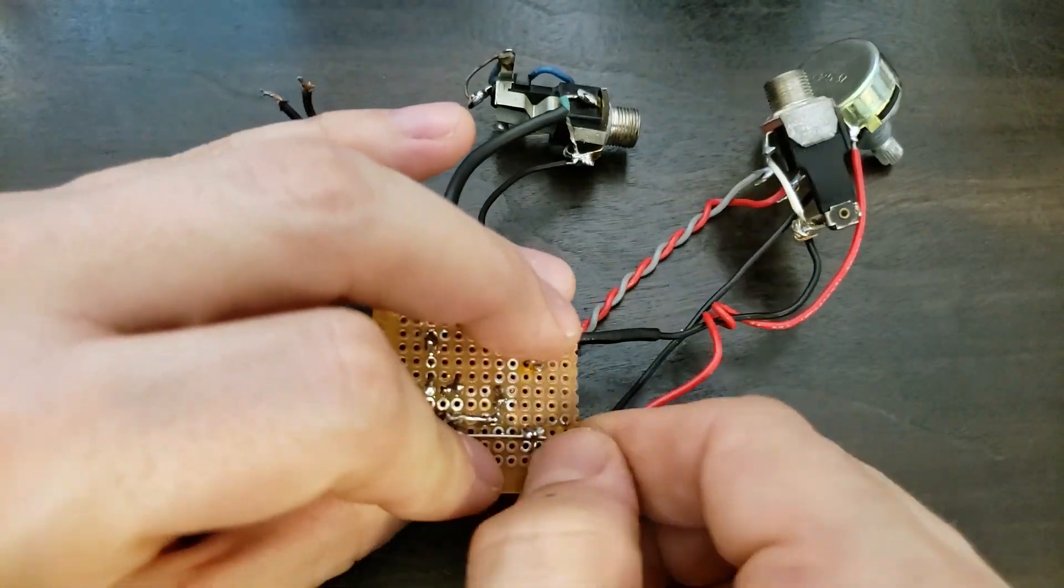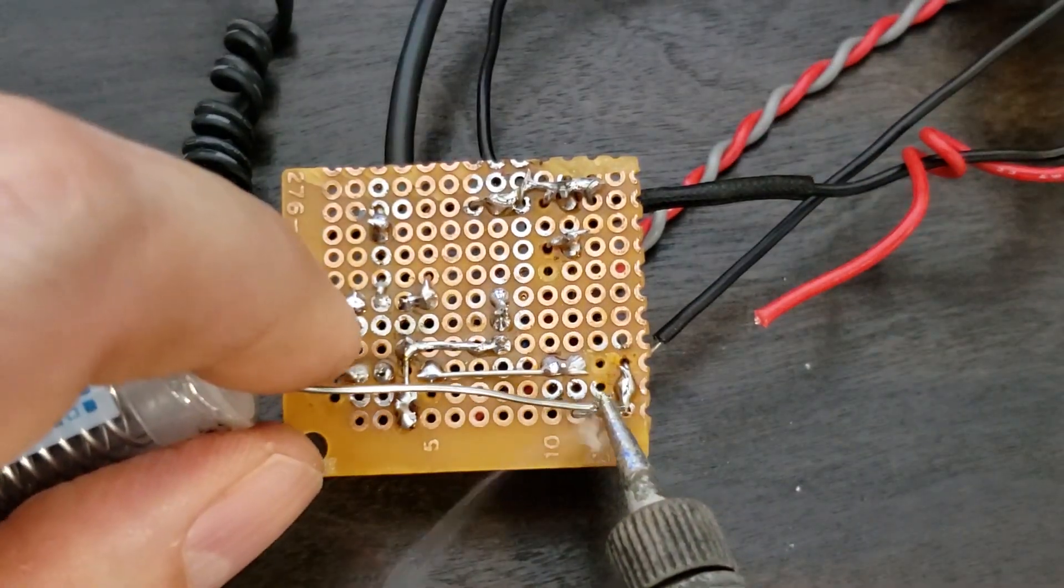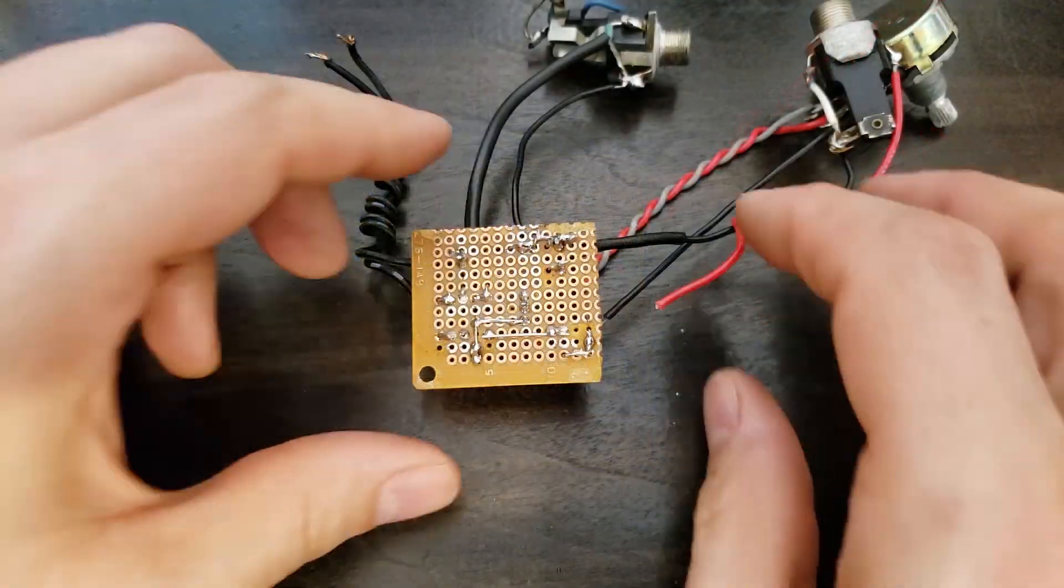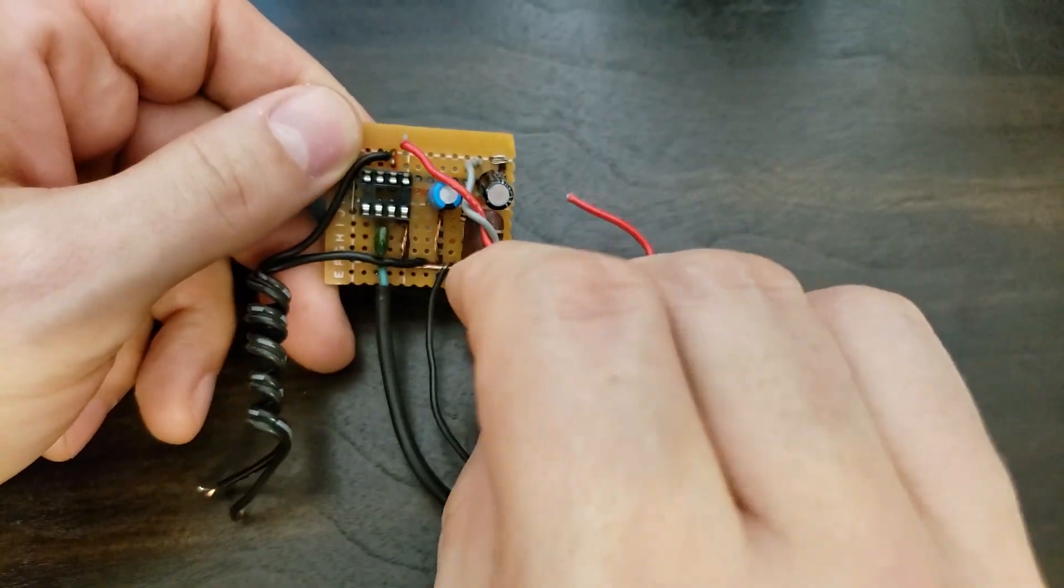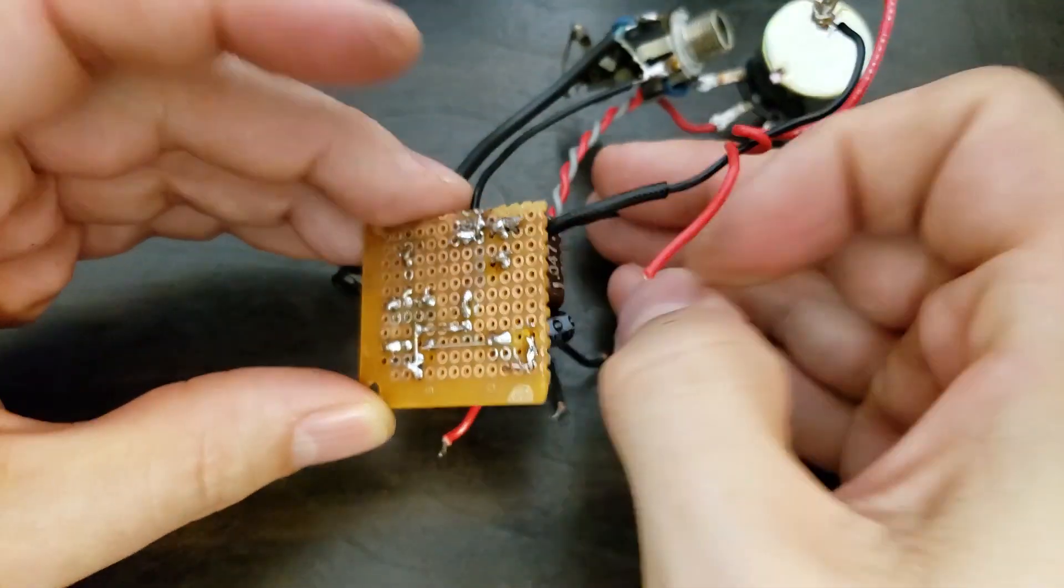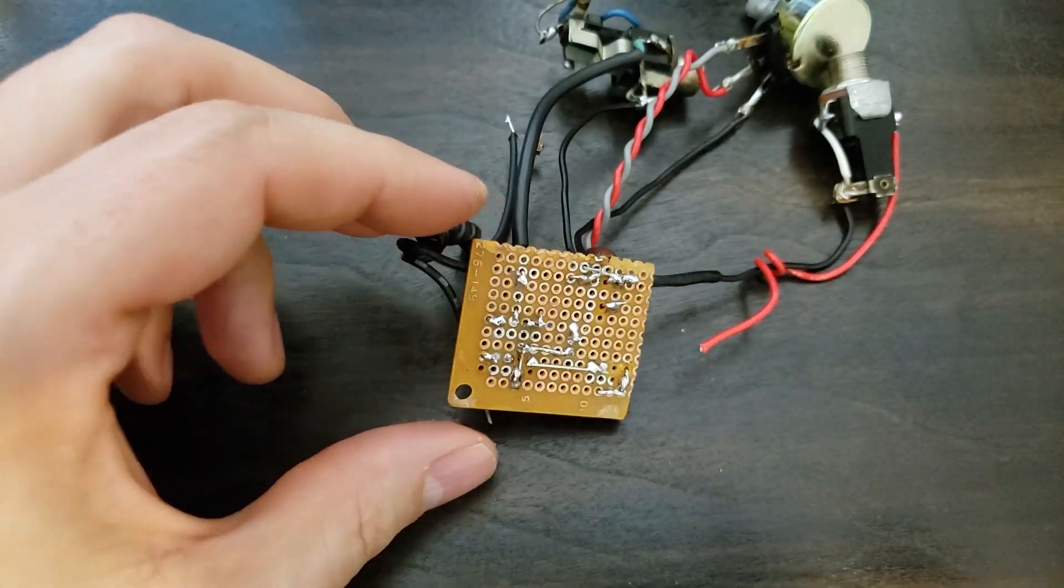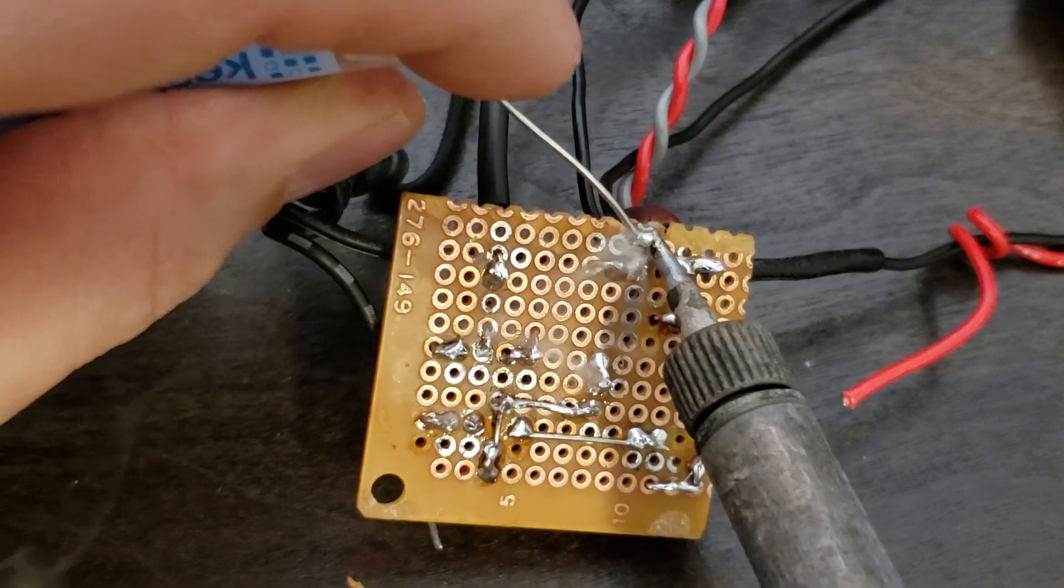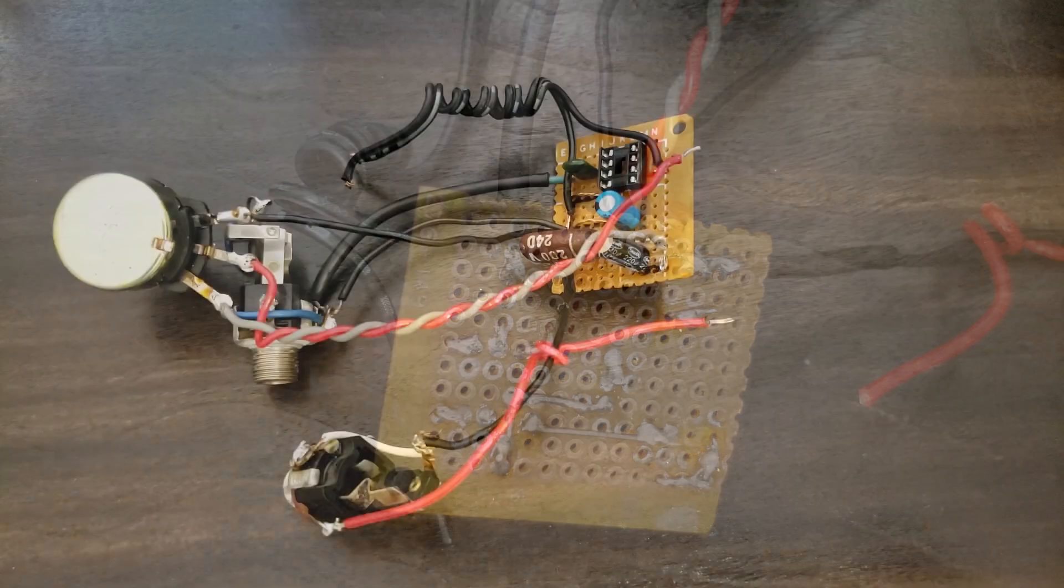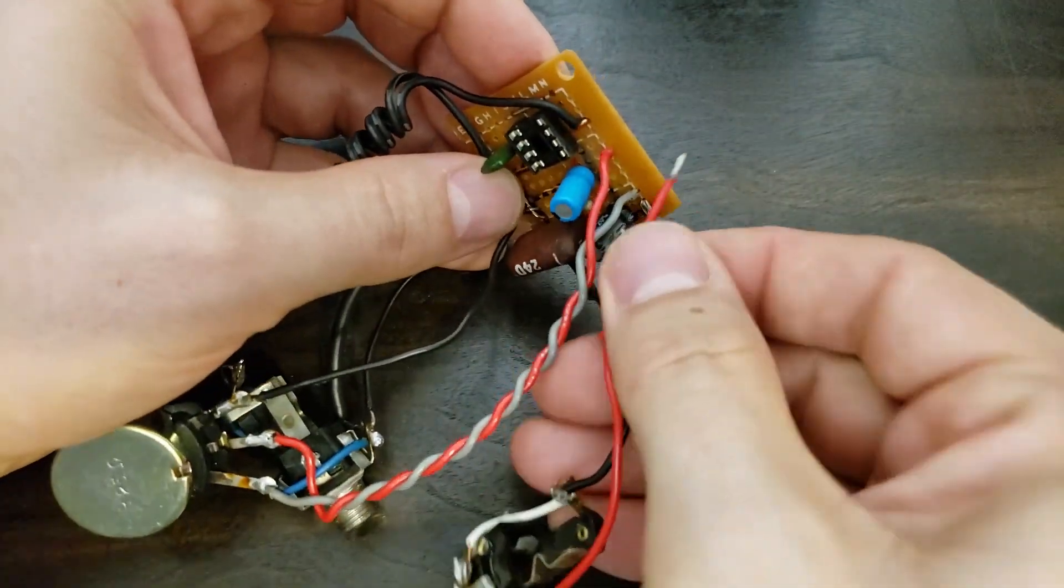Pin 1 of the volume control goes to the output leg of the capacitor. Pin 3 goes to ground. Pin 2, the middle leg, gets connected to the output jack positive. In this case, add two open slots on the board.